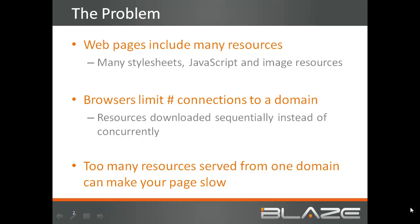The fastest way to download a set of many files is to request many files at the same time, rather than waiting for the first download to complete before requesting the next.